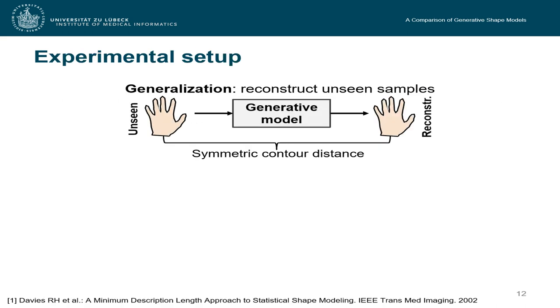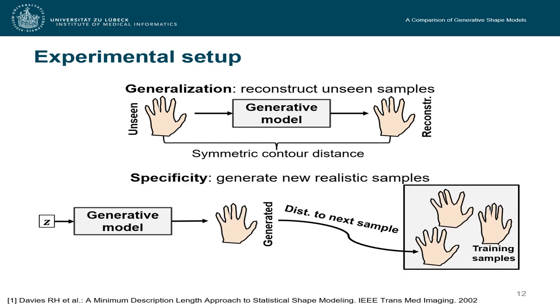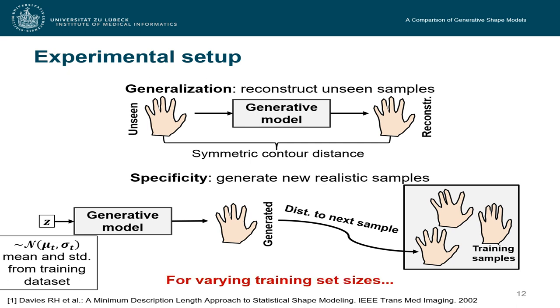We evaluated in terms of generalization ability, which is the ability to reconstruct unseen samples. And in terms of specificity, which is the ability to generate new realistic samples. To be fair here, for all methods, we sampled z from a normal distribution with mean and standard deviation approximated from the training dataset. Also, an important fact is that we computed those properties for varying training set sizes from 5 to 130 to see how this affects the final results.